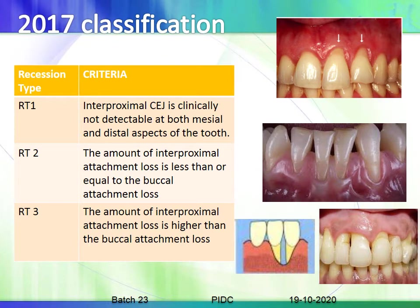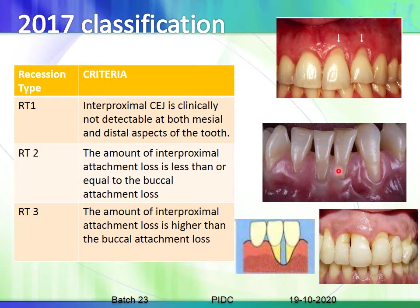The above belongs to the 1999 classification. The more recent 2017 classification categorizes recession as RT1, RT2, and RT3. RT1: the interproximal CEJ is clinically non-detectable at both the mesial and distal aspects of the root. RT2: the amount of interproximal attachment loss is less than or equal to the amount of buccal attachment loss. RT3: the amount of interproximal attachment loss is higher than that of the buccal attachment loss.